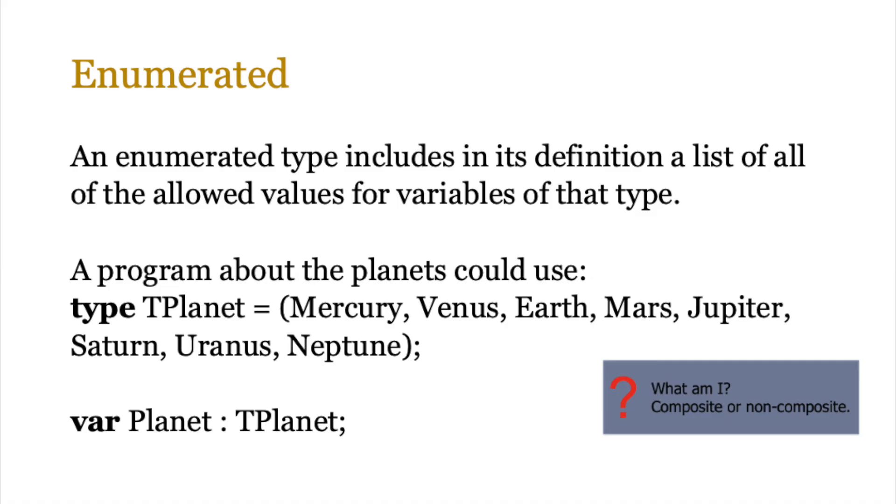So let's start by looking at enumerated. An enum, or enumerated type, includes in its definition a list of all of the allowed values for the variables of that type. Now in pseudocode format, and yes there is a bit of pseudocode that sometimes you will need to use in Paper 3, a program about planets could use the type TPlanet. Now this particular enumerated type will have these planets in there, Mercury, Venus, Earth, Mars, and so forth. Whenever we want to define a particular planet, we can create a variable planet which will now be of the type TPlanet.